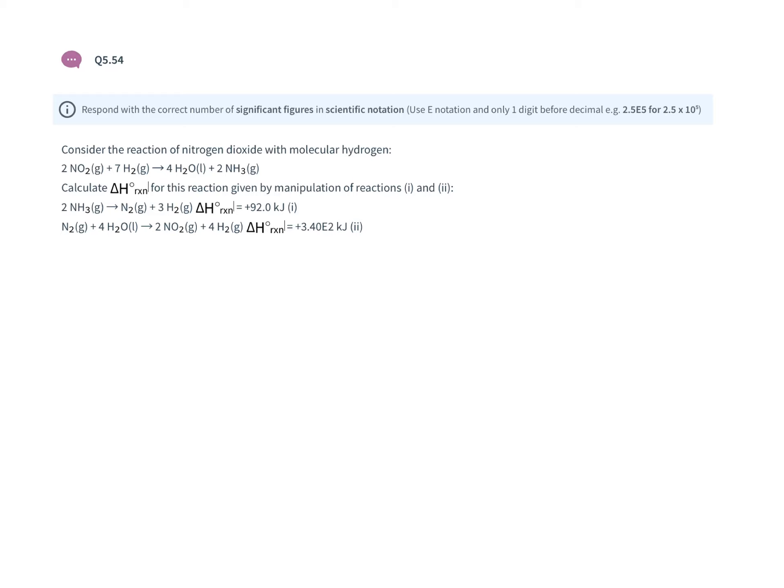For question 54, we're given two reactions. Ammonia breaks down to nitrogen and hydrogen with a ΔH of 92 kilojoules. Nitrogen reacts with water to produce nitrogen dioxide and hydrogen gas with a ΔH of 340 kilojoules.